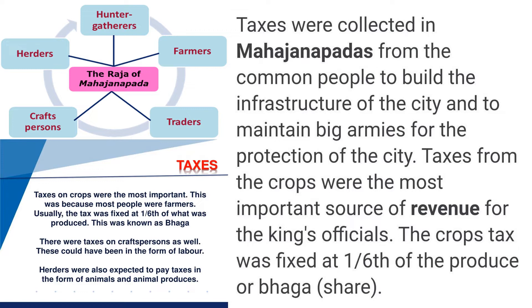Point number four: tax was collected from goods also. If you are purchasing any goods from the market, you had to pay the taxes. Point number five: hunter-gatherers. Because they were living in the jungles, they had to pay taxes in the form of animal species, medicinal plants, honey, wax, or other things. In this way, tax was collected for the Mahajanapadas by the king and his officers, as he needed money to maintain the big armies for the protection of the city.